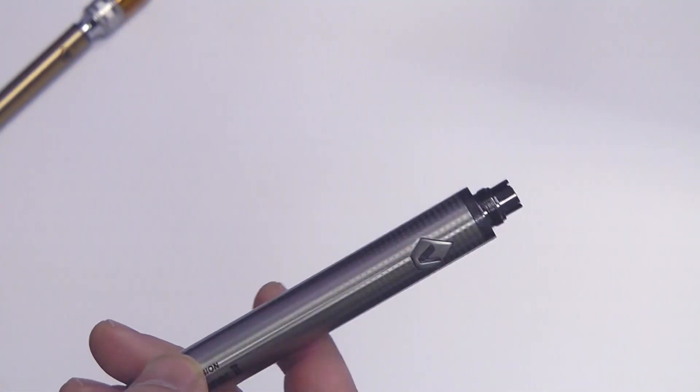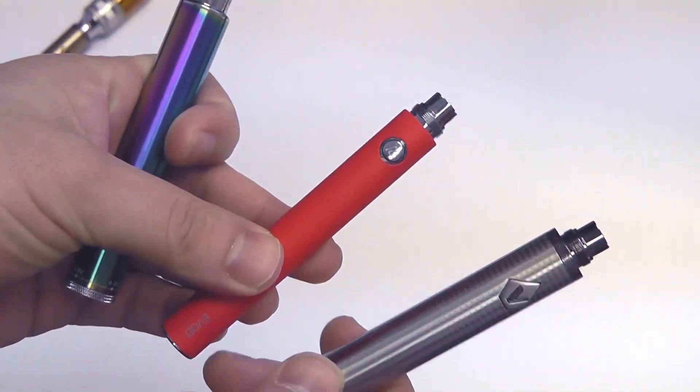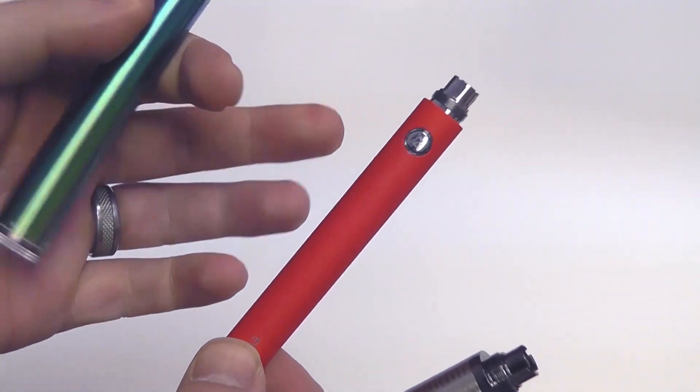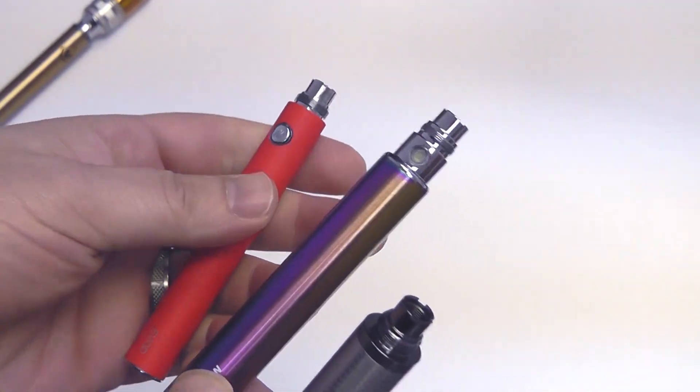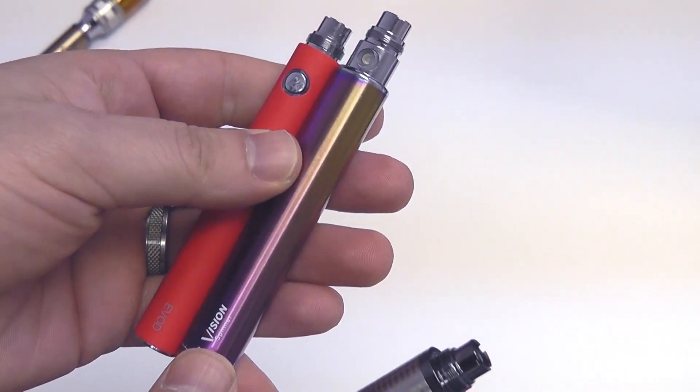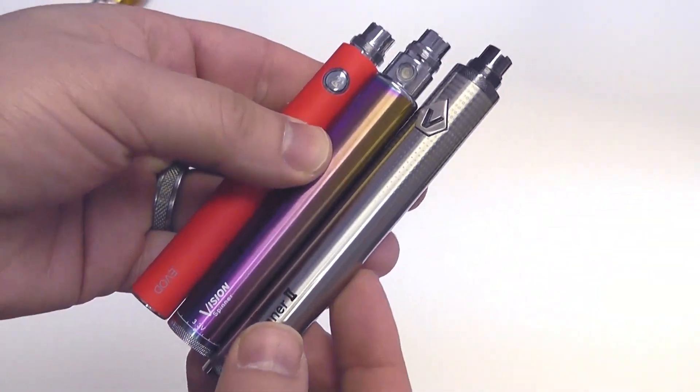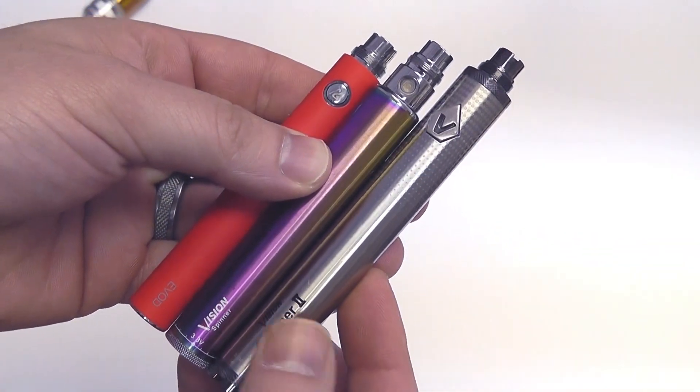So real quick we'll take a look at it side by side here with a couple of other batteries. I've got an EVOD 1100 milliamp battery here, the original Vision Spinner battery, and then the Vision Spinner 2. You can see the difference in size there.